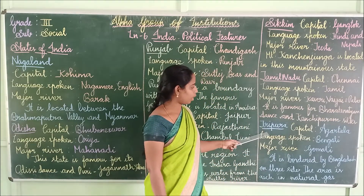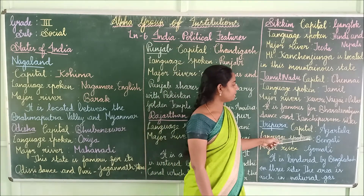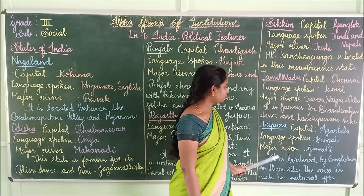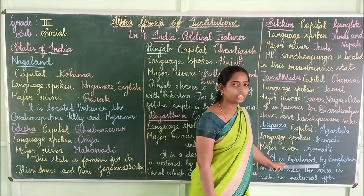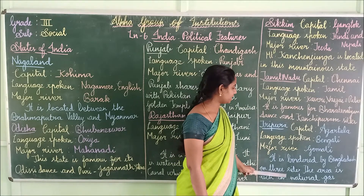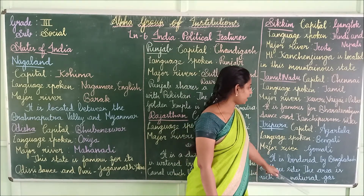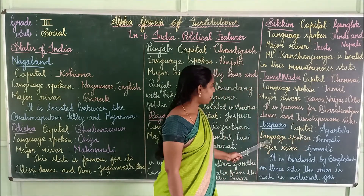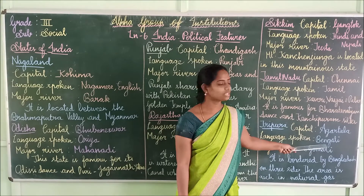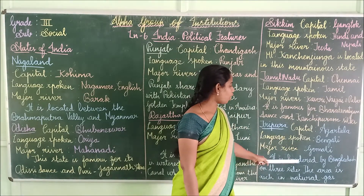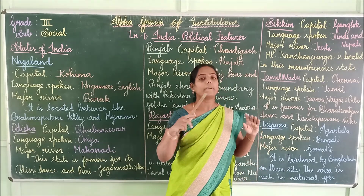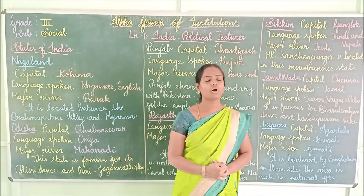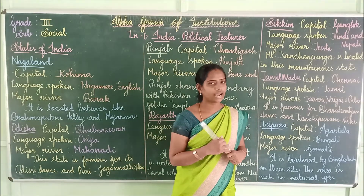The next state is Tripura. Its capital is Agartala, language spoken is Bengali, and its major river is Gomati. Tripura is bordered by Bangladesh on three sides, and the area is rich in natural gas.